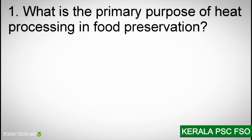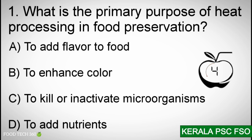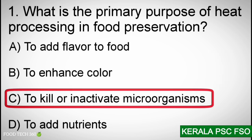Q1: What is the primary purpose of heat processing in food preservation? Options: A) To add flavor to food, B) To enhance color, C) To kill or inactivate microorganisms, D) To add nutrients. Correct answer: C — To kill or inactivate microorganisms.